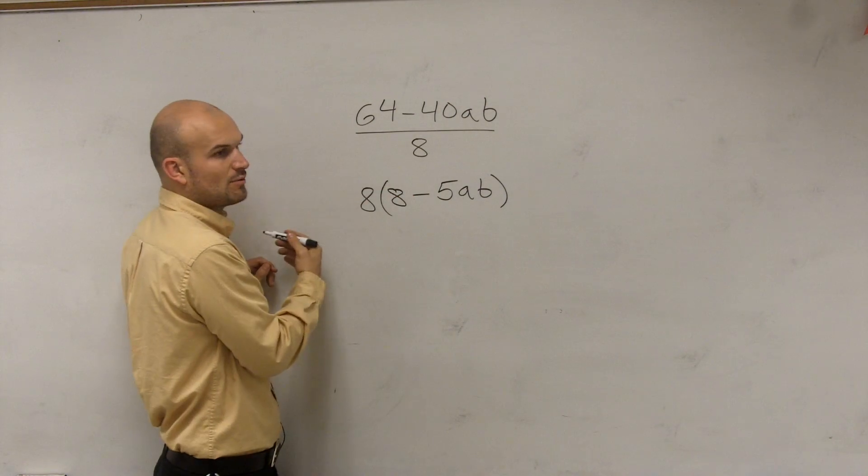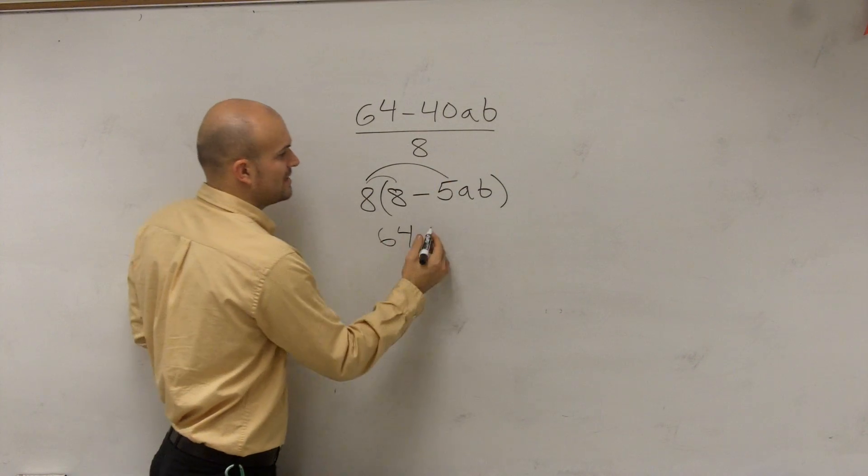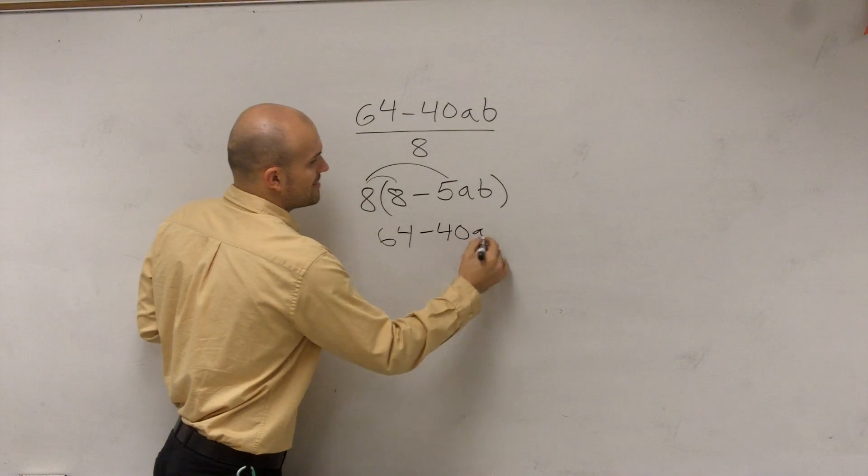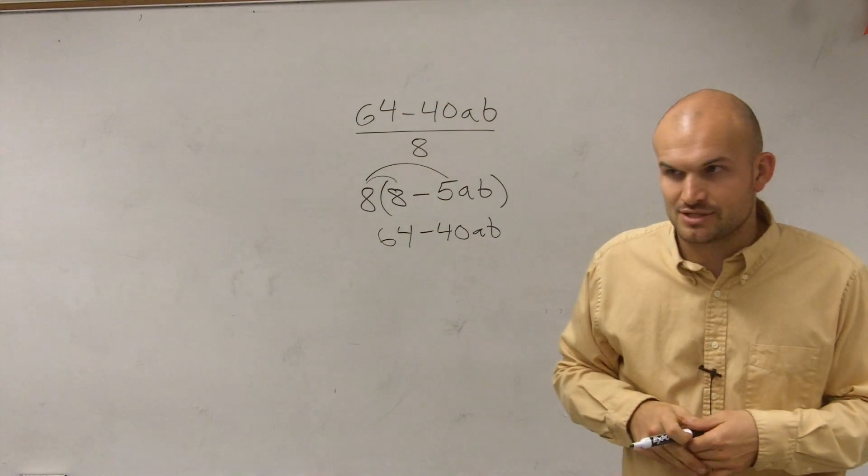Does this give us back our original answer? What's 8 times 8? 64. What's 8 times negative 5AB? Negative 40AB. So what we're practicing doing is rewriting our equations.